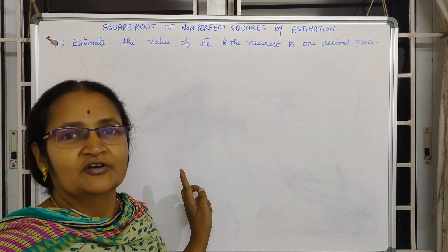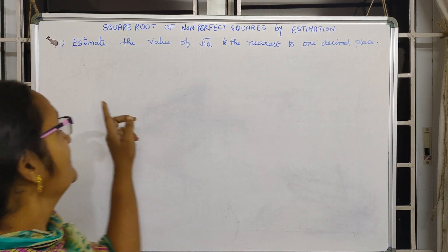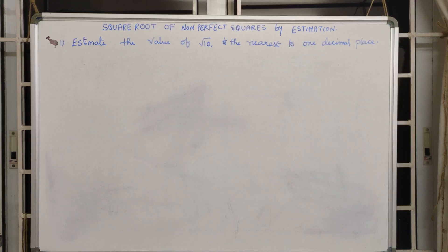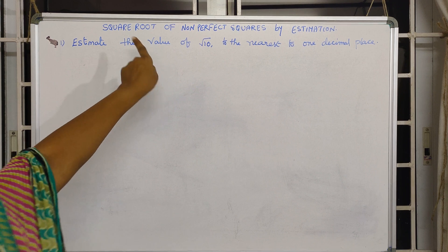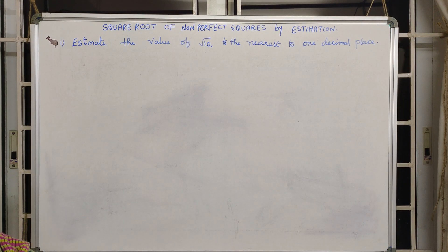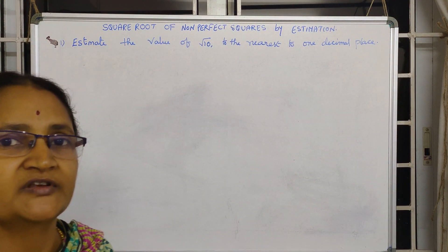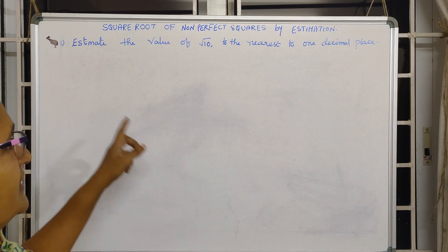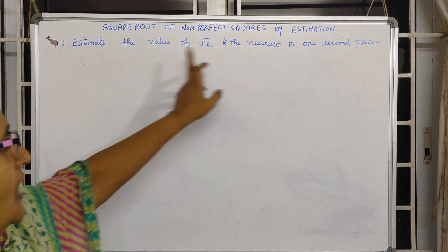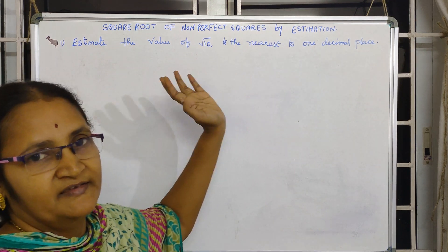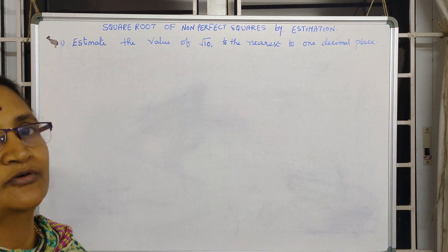Let us see the next concept: square root of non-perfect squares by estimation. Previously we learned the square root of non-perfect squares by long division method, up to three or four decimal places. Here, the question asks only up to one decimal place, so we are going to learn the estimation method without long division.